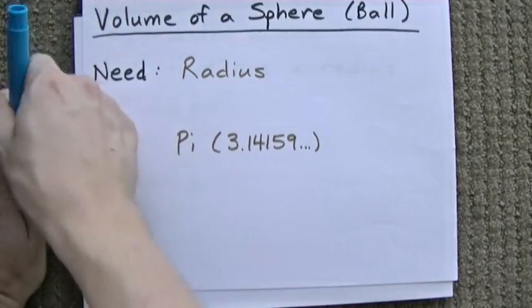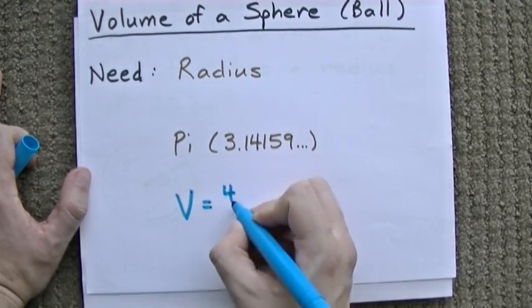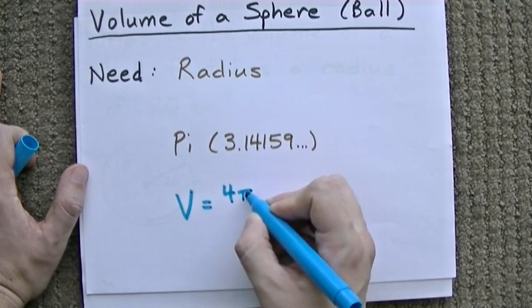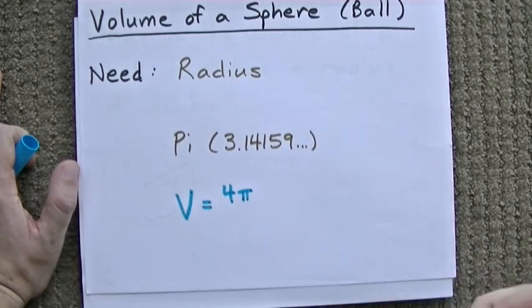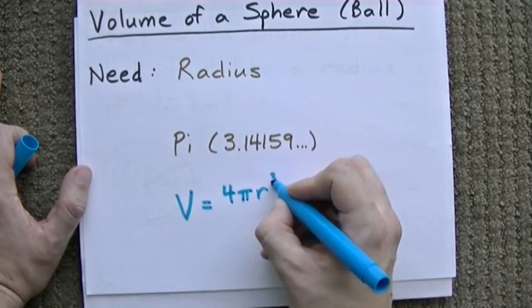And I suppose you need the formula. The volume of a sphere is 4 times pi - this is my symbol for pi, but remember it just means 3.14 - times the radius cubed.